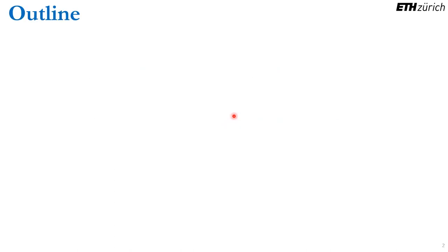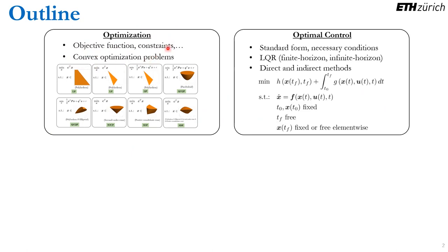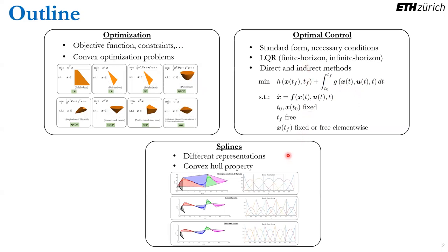The outline we are going to follow throughout the presentation is this one. We will first start by talking about optimization, where we are going to define what an objective function is, what the constraints are, and then we are going to talk about a property called convexity. We will also classify convex optimization problems in different types. Then we will jump into optimal control, see the similarities and differences with respect to a standard optimization problem, and explain a very important optimal control example called the linear quadratic regulator, LQR. Then we are going to talk about different methods to solve more complex problems, specifically direct and indirect methods. And finally, we are going to talk about splines, different representations of these splines, and also about one important property called the convex hull property.